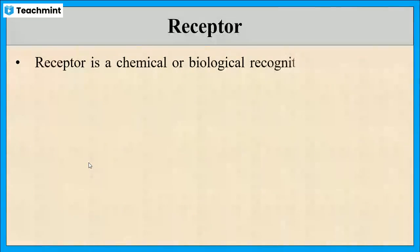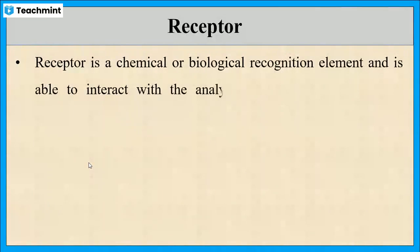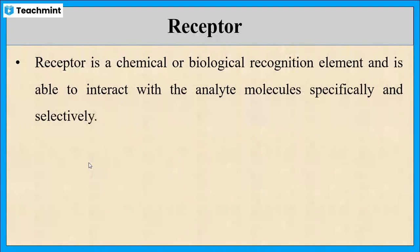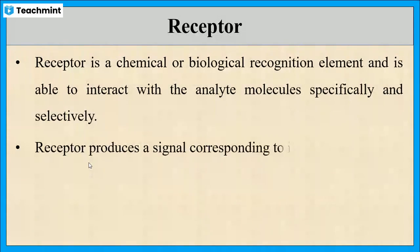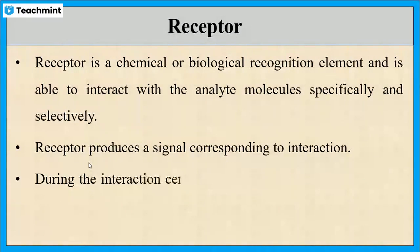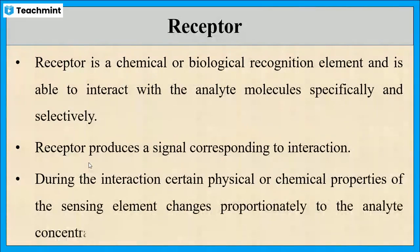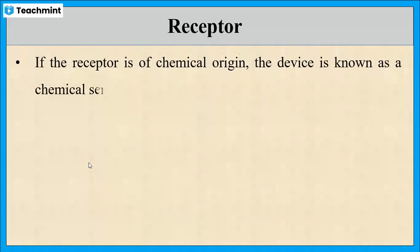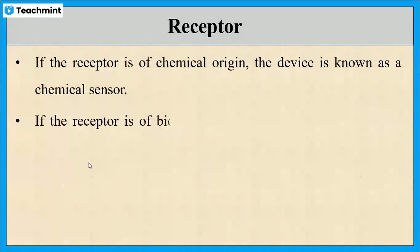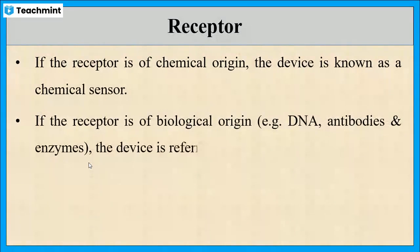The receptor is the recognition element and is able to selectively interact with an analyte molecule. Based on the interaction, the receptor produces a signal, and certain physical or chemical properties of the receptor may change in proportion to the analyte concentration. In chemical sensors the receptor is of chemical origin, and in biosensors the receptor is of biological origin.